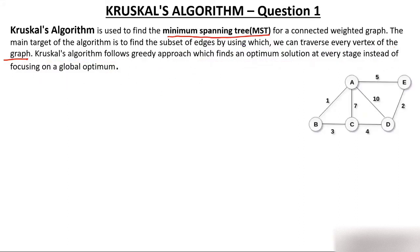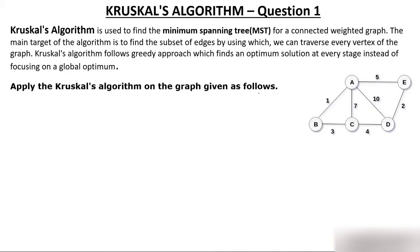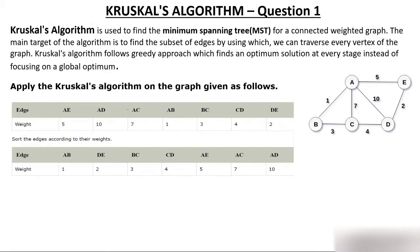You have a weighted graph with five vertices. You know that Kruskal's and Prim's can only be applied on a weighted graph. Now apply Kruskal's algorithm on the given graph. Kruskal's algorithm says: first, arrange all the edges in sorted order by weight. The weight of AB is 1, so it takes first position. The weight of DE is 2, so it takes second position, then BC and so on. Arrange all edges in increasing order of weight.